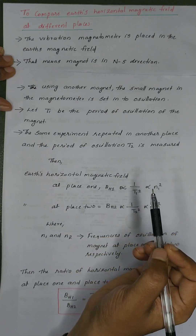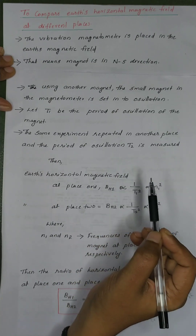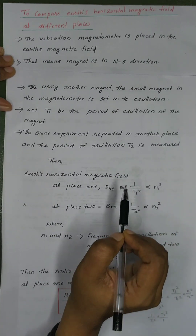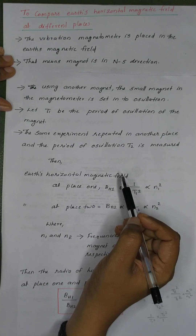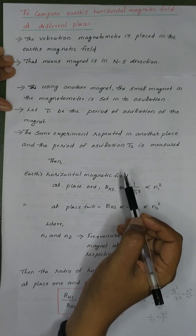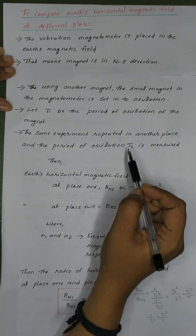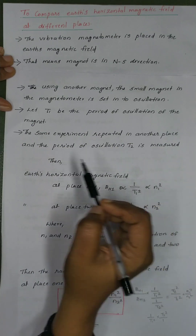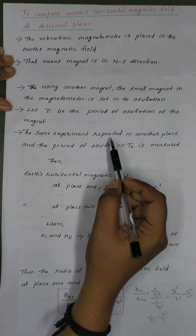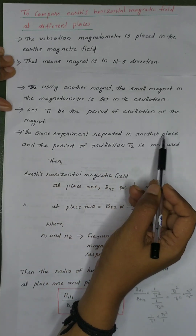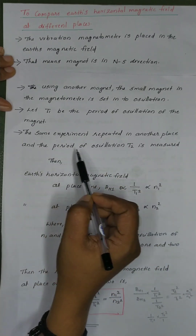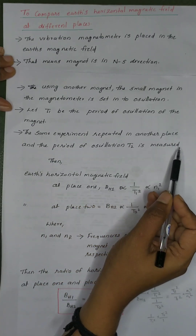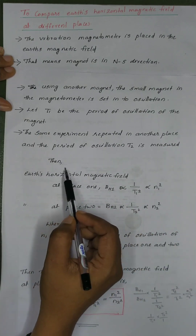The same experiment is repeated at another place and the period of oscillation is measured. This period of oscillation at the second location is called T2.